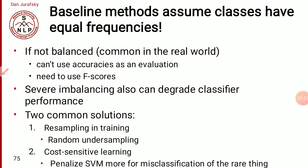The baseline method assumes classes have equal frequencies. In the case of a combination of positive and negative aspects, if the classifier performance degrades, you need to use the F1 score. The F1 score is the harmonic mean of precision and recall. To balance classes, you can use resampling — for example 30/30 — or similarly cost-sensitive learning, like penalizing the SVM more for misclassification. These are the things you need to address for imbalanced data.